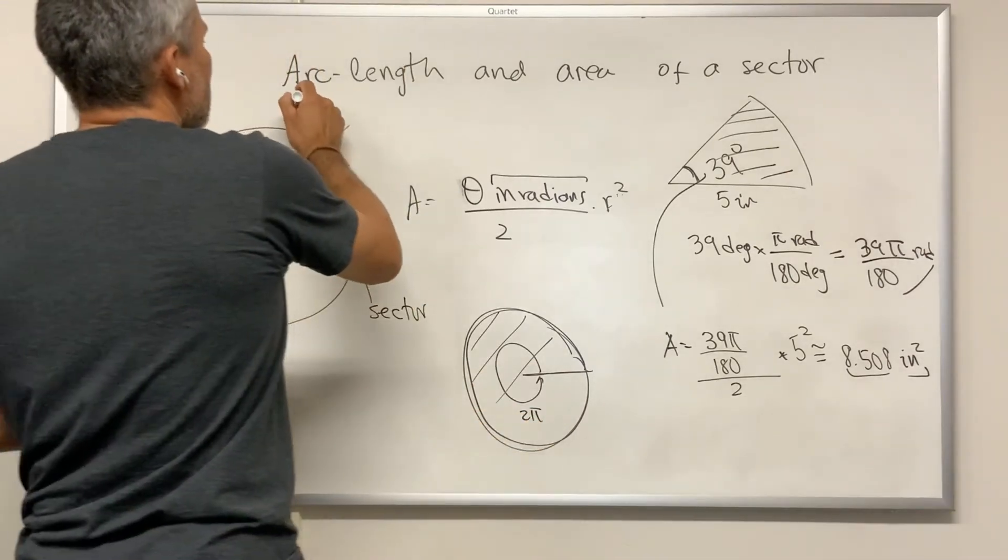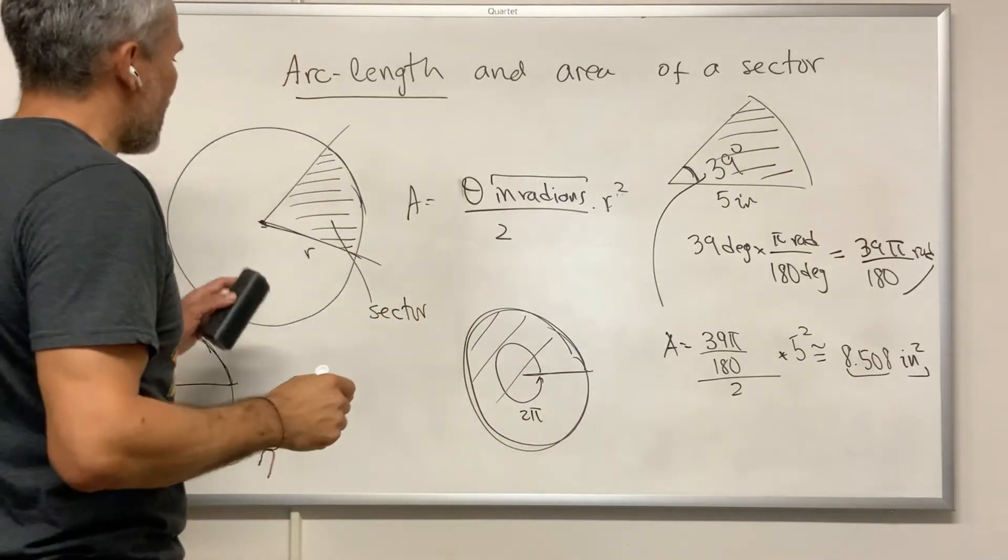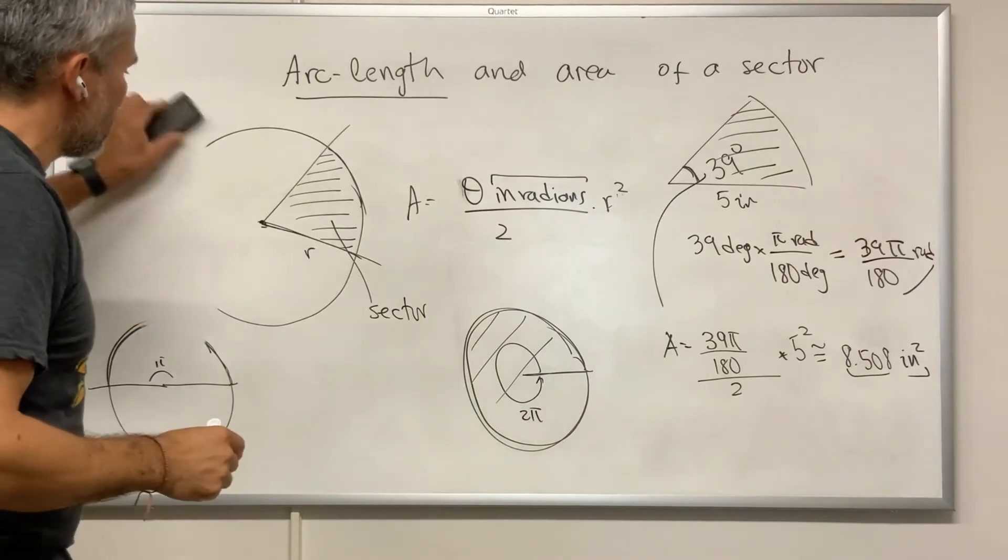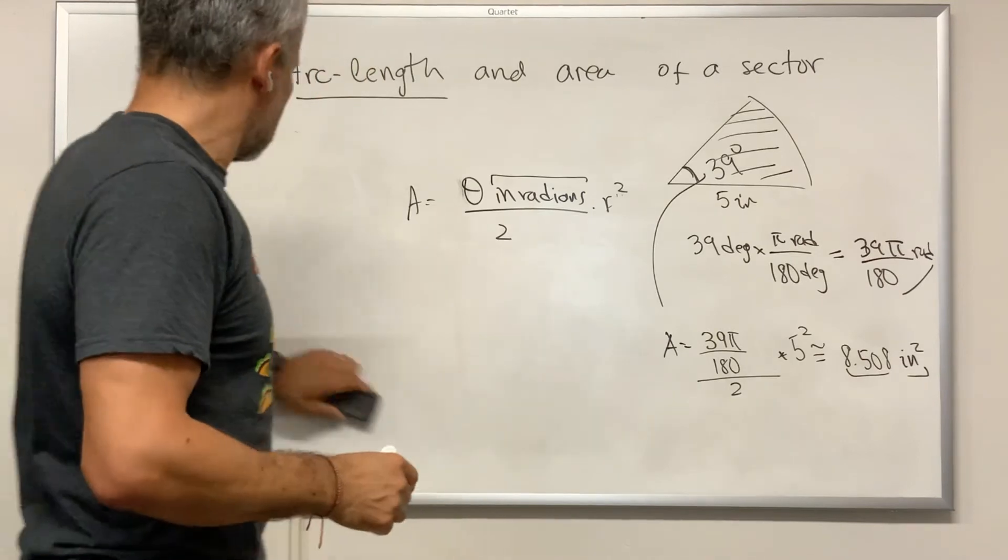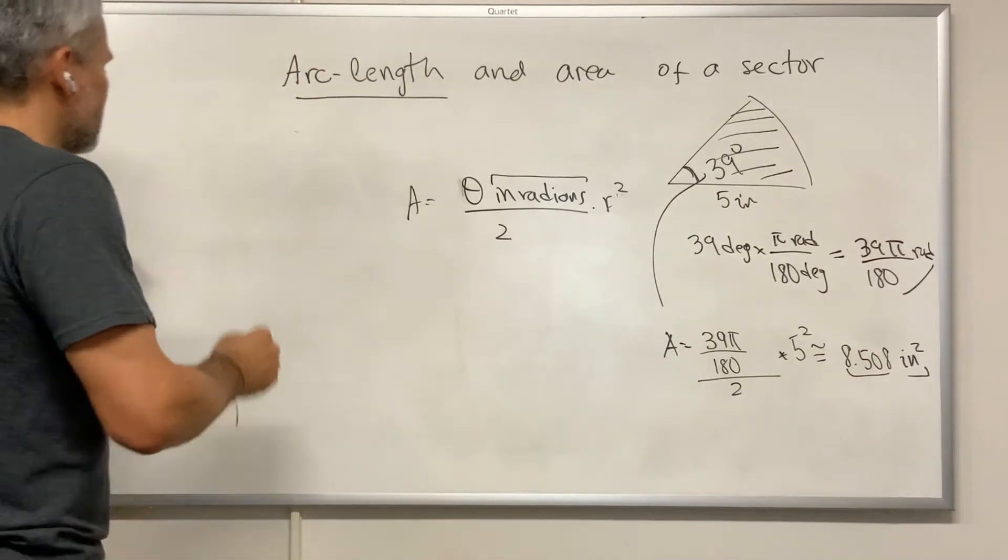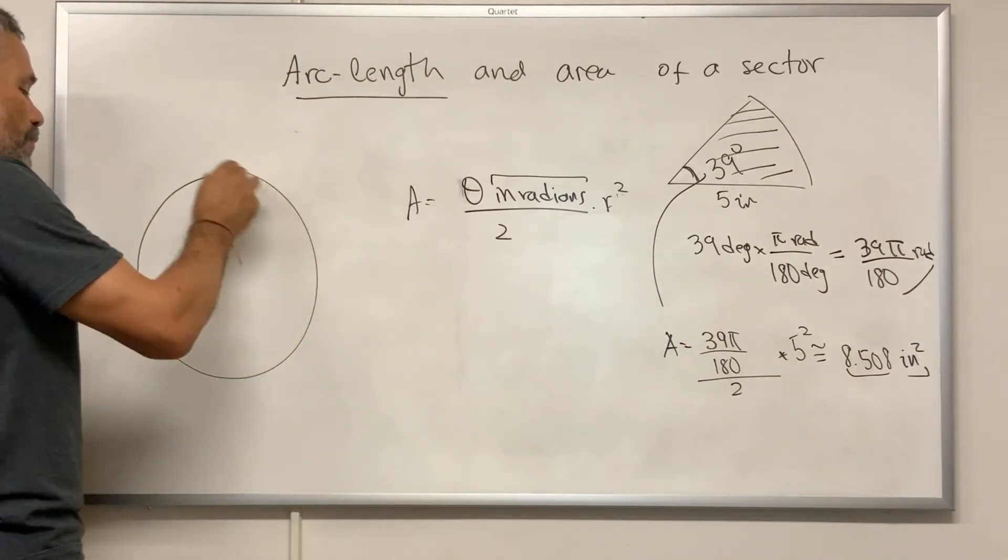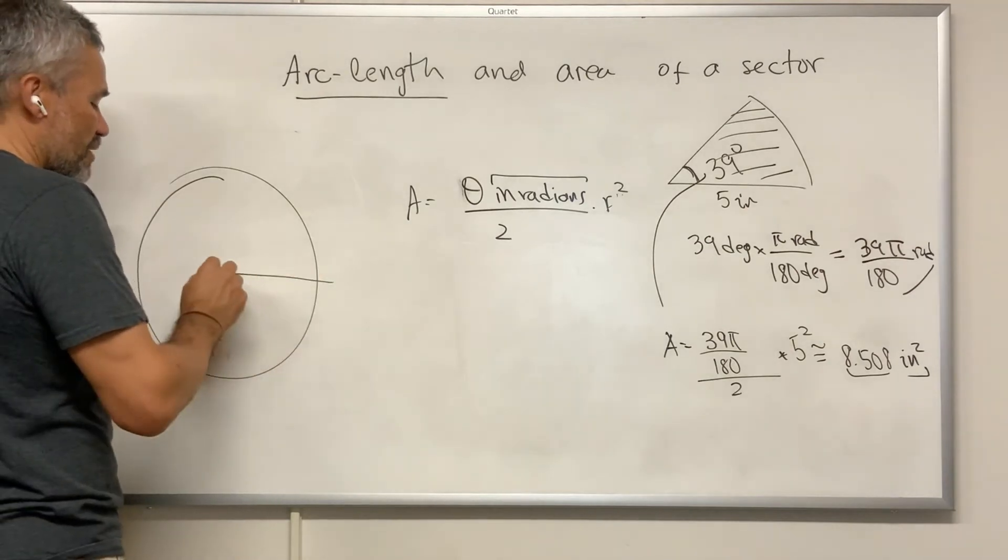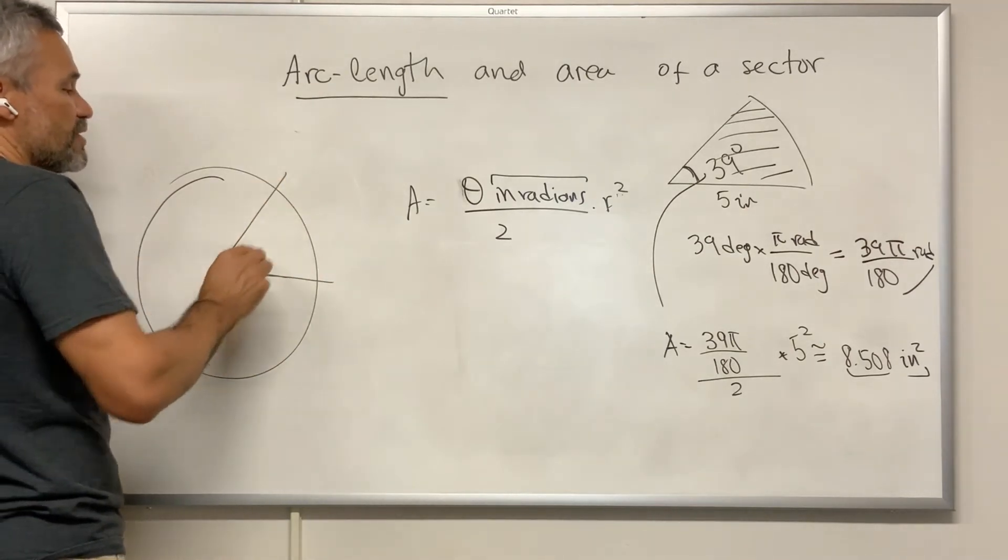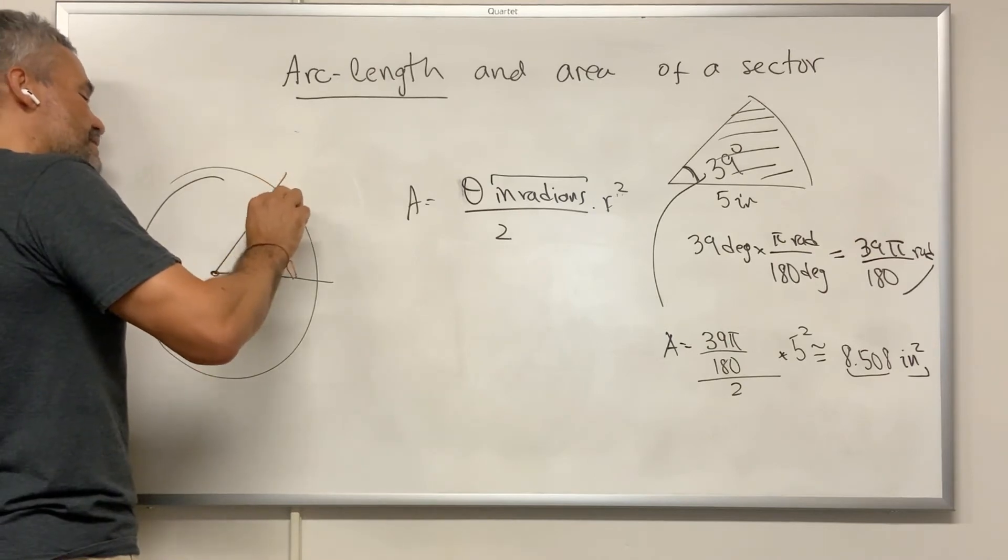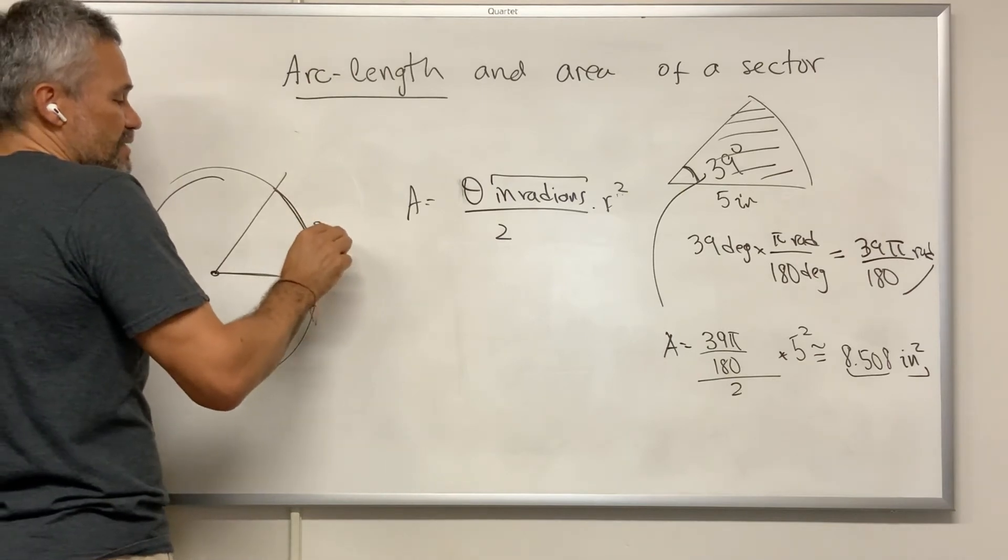Now let's find the length of an arc. If we have the same situation, we have a circle of radius r, but now we consider an angle with center at the origin of the circle, but we are wondering about this distance. This distance is called the arc. And it usually is denoted by s.